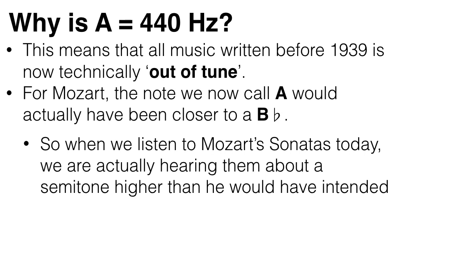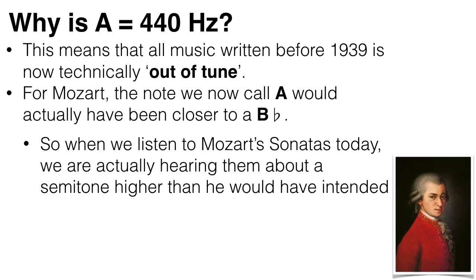So a Stradivarius violin today does not sound like a Stradivarius violin when it was first made. And of course, this means that all music written before 1939 is now technically out of tune. For example, in Mozart's time in the Holy Roman Empire, the note we now call A would actually have been closer to a B flat. So when we listen to Mozart's sonatas today, we're actually hearing them about a semitone higher than he would have intended.